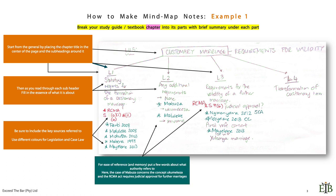And for ease of reference and memory, put a few words about what the authority itself refers to. So in the case of Mabuza, it dealt with Ukumekeza. With Maluleke, it dealt with the concept of Imwume. And the RCMA Act requires judicial approval for further marriages.